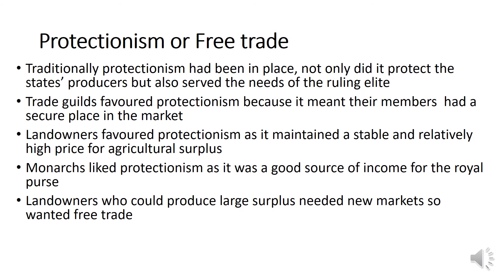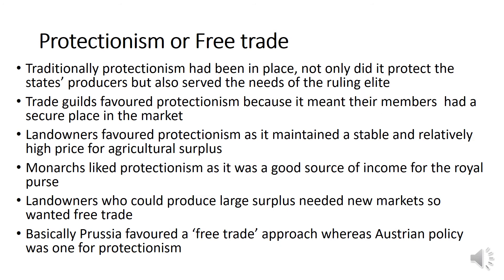However, landowners who could produce large surpluses needed new markets and therefore supported free trade, wanting to sell their produce abroad. There was a clear divide: smaller-surplus landowners preferred protectionism for high domestic profits, while larger-surplus landowners stood to gain much more from trading internationally. Prussia favoured a free trade approach, whereas Austrian policy was one of protectionism. This created another area of tension between Prussia and Austria, as these policies would cover most of the German Confederation — Prussia really wanted to move towards free trade while Austria wanted to maintain protectionism.